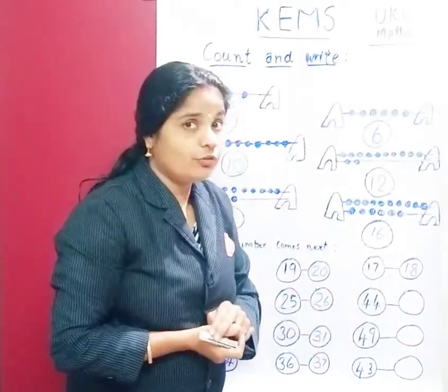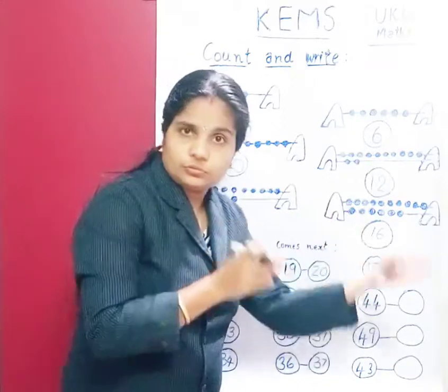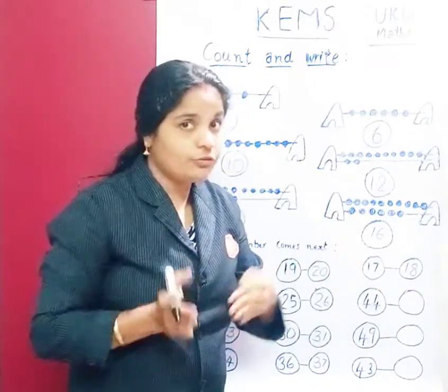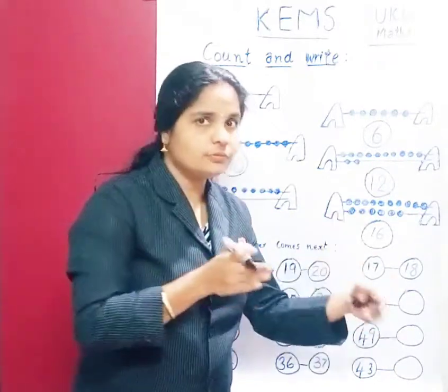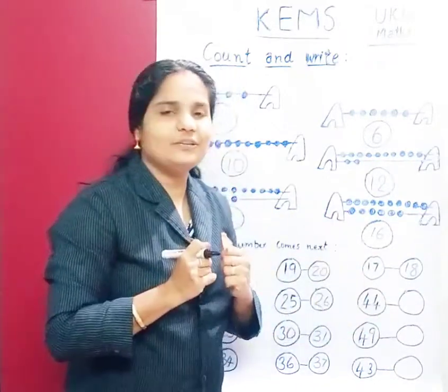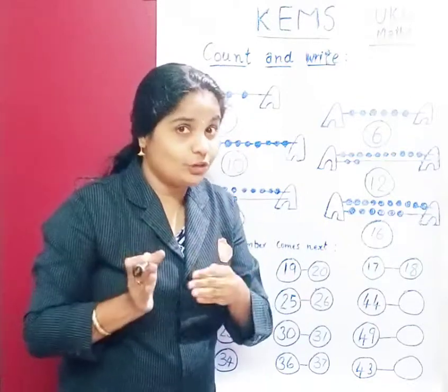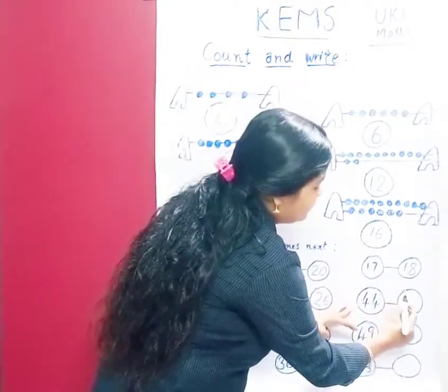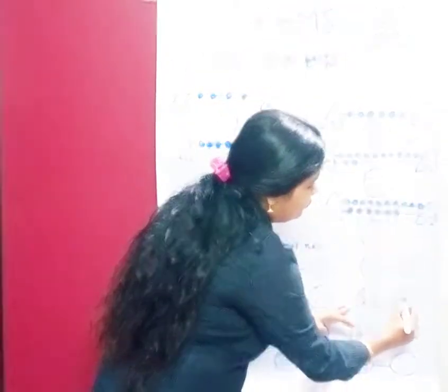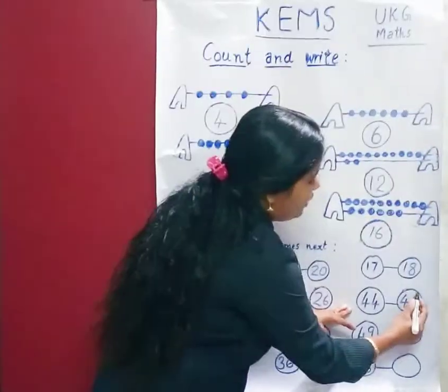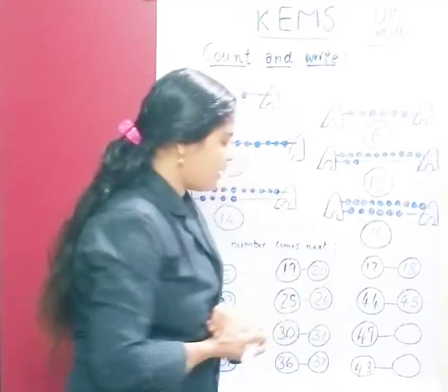Next: 44. After 44 is 45. Very good. 44, 45. Write 4, 5 — 45.